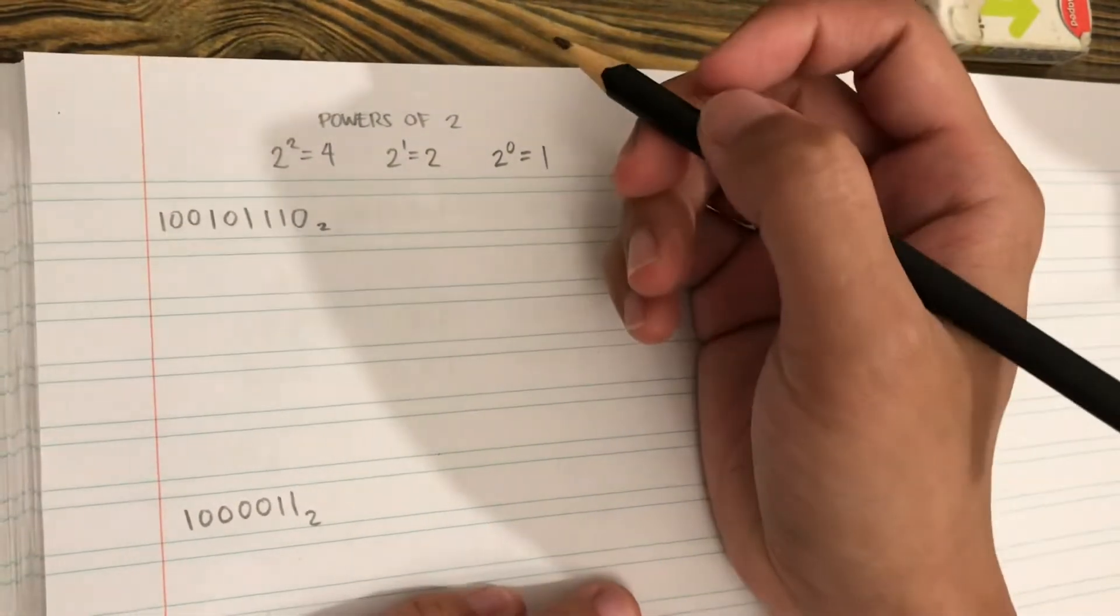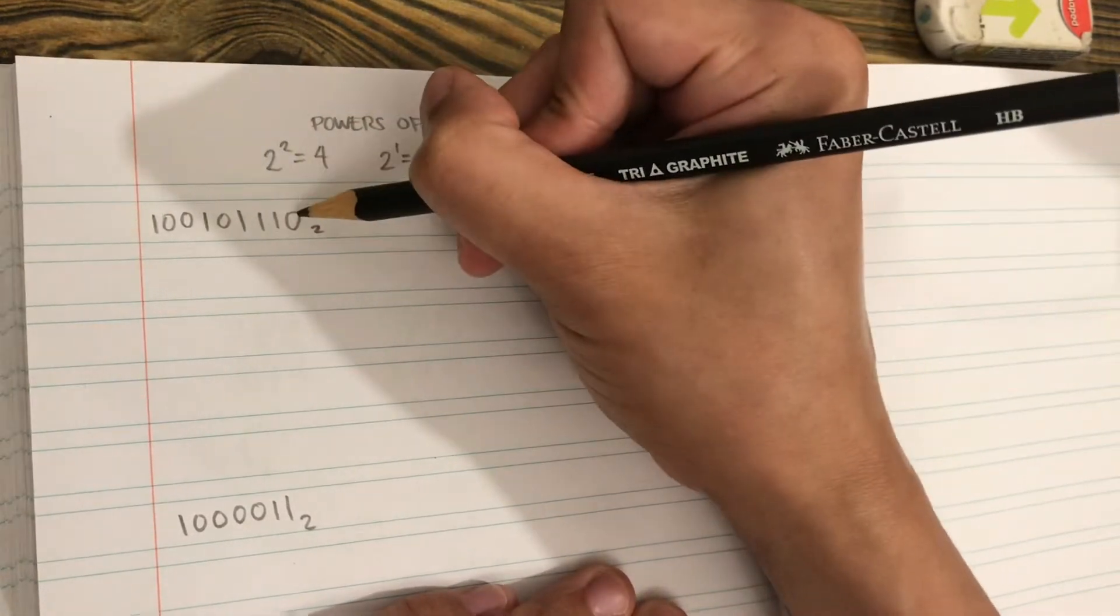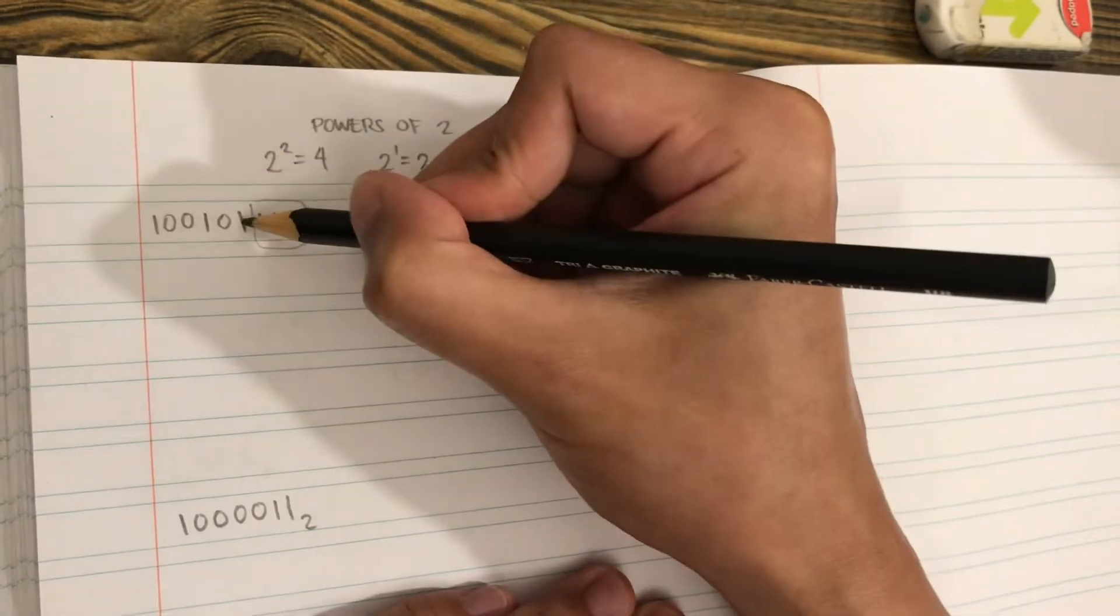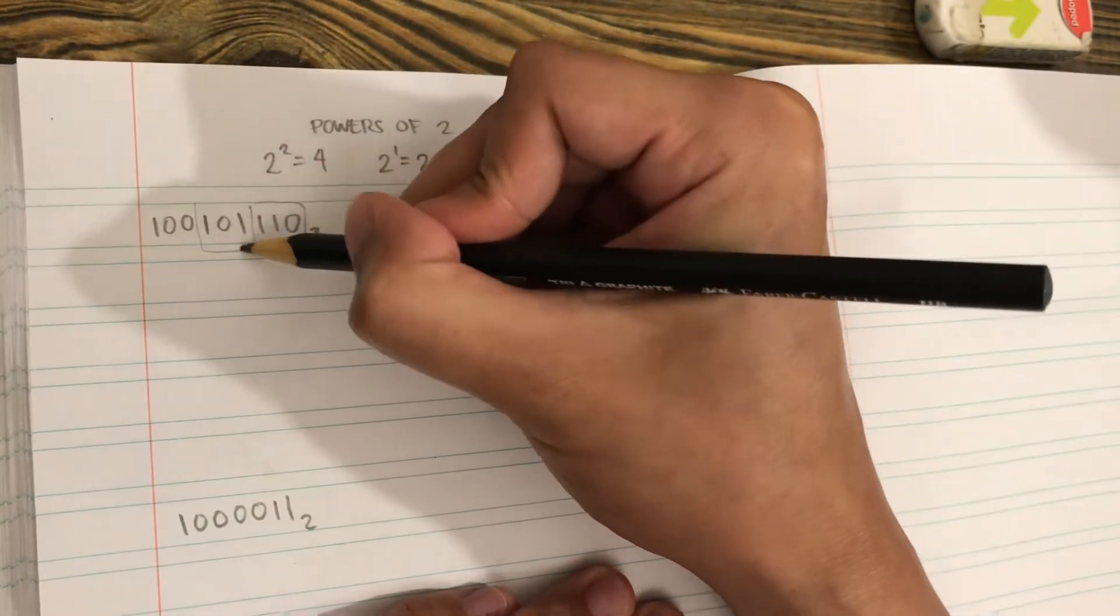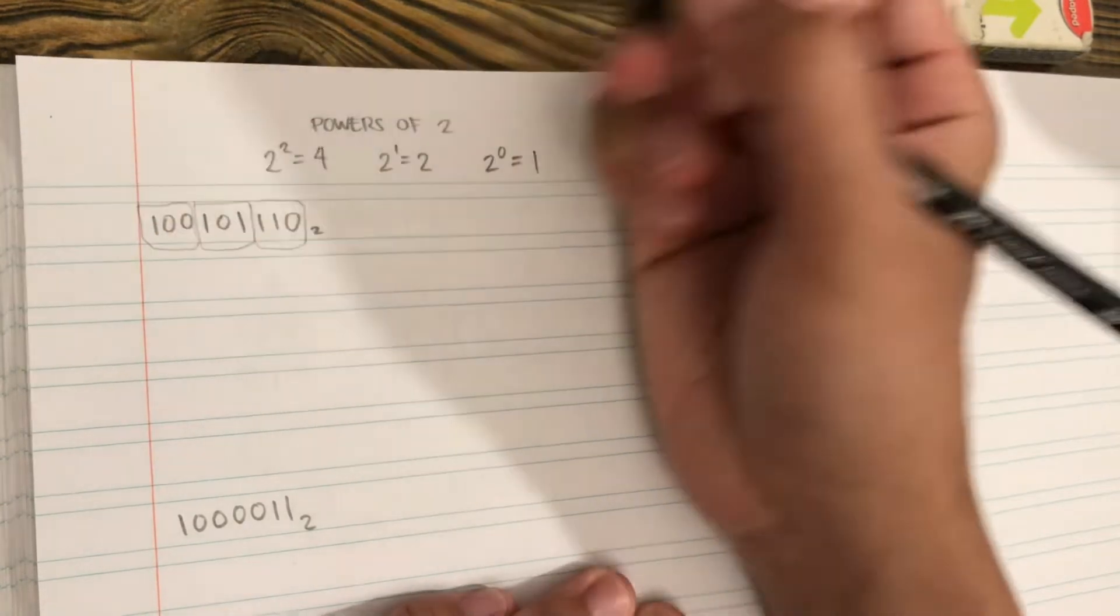The first step is grouping the numbers into three, starting from the right. One, two, three - this is the first group. One, two, three - this is the second group. One, two, three - this is the third group.